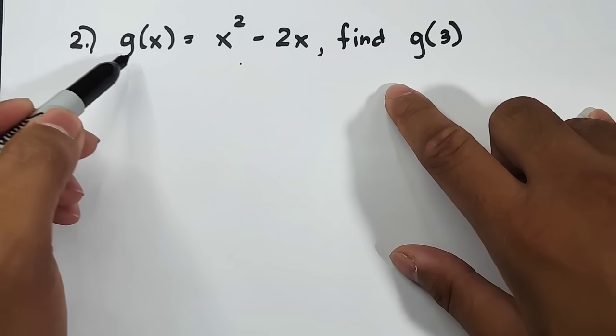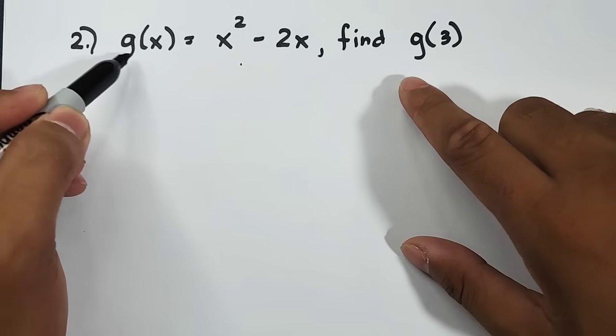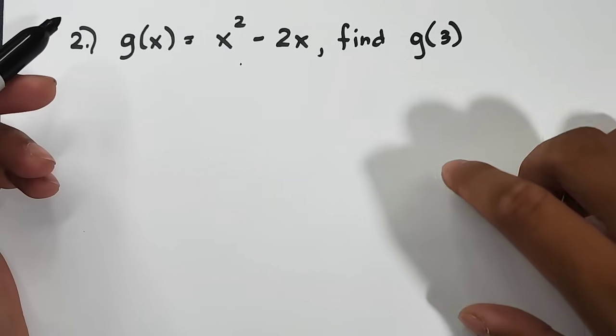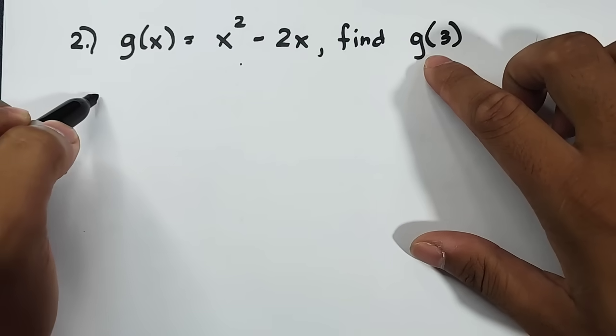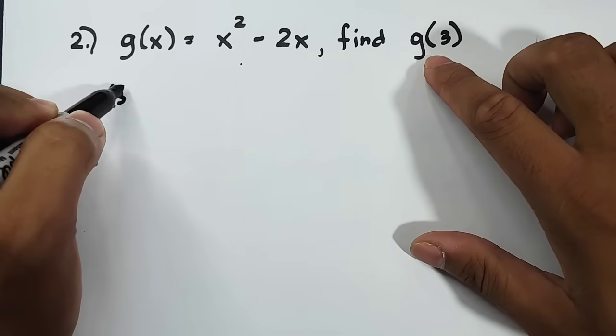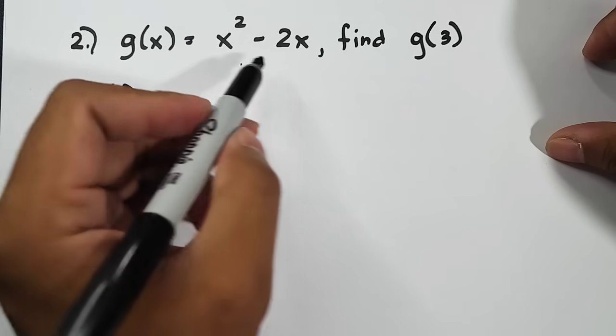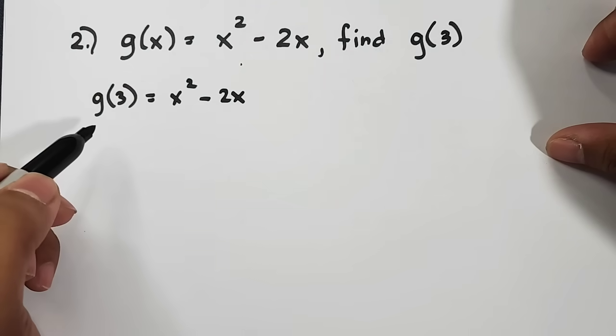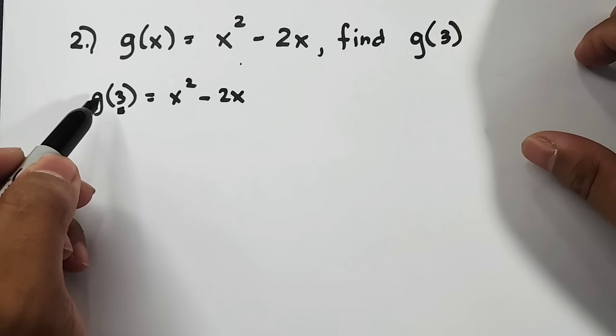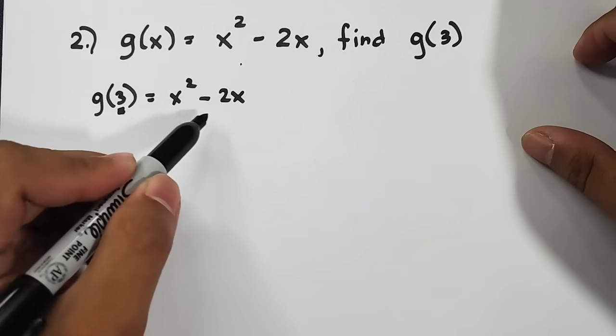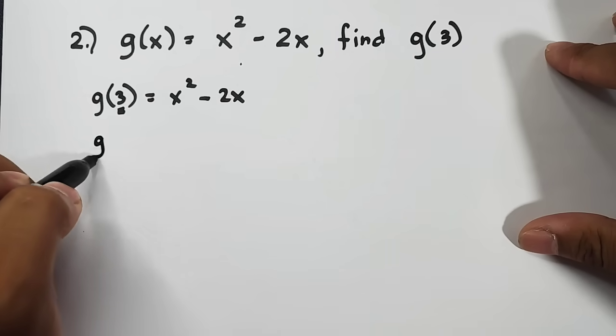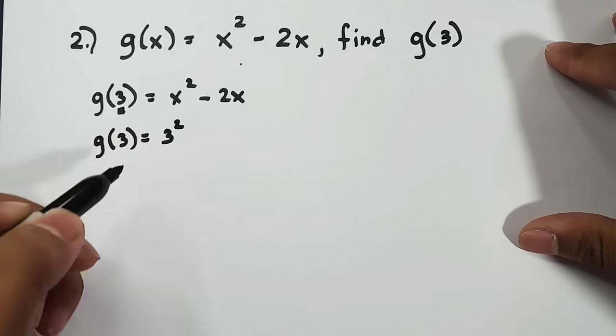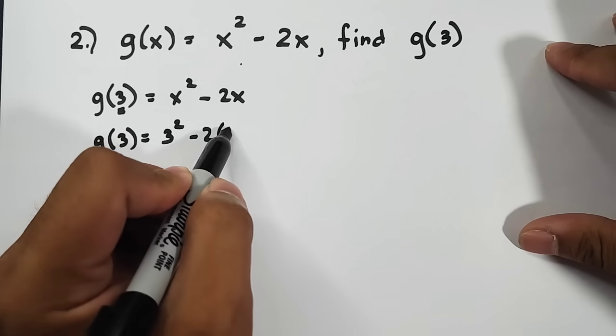So don't be confused again guys. We changed from letter f to letter g. So, from the previous example, we used function f. But that's okay. Here, copy your g of 3. And then, copy this part: x squared minus 2x. Meaning, your input is equal to 3, or you will replace all the variable x by 3. So, we have now g of 3 is equal to 3 squared minus 2 times 3.